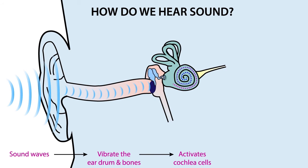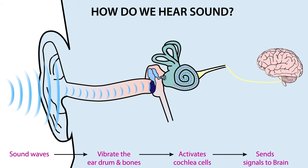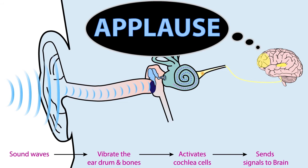These cochlea cells then send the signal to your brain via the cochlear nerve. And ta-da! You can hear the applause!